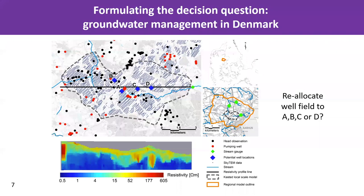Coming back to the Danish case, let's see how this can work. What we want to do first, of course, is formulate the decision question. We go to a smaller area in Denmark near Aarhus. In that small area, we'd like to decide where to drill the next drinking water well. Four alternatives have been given to us: location A, B, C, or D. That's basically the question — where would you drill, and how would you now solve this problem?